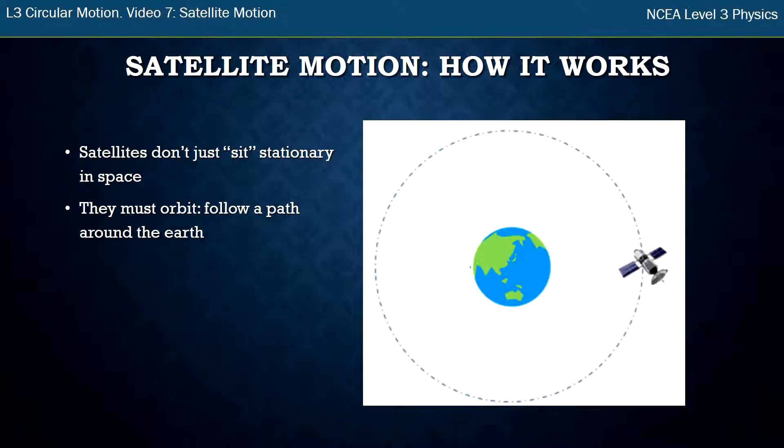A misconception is that satellites just sit stationary in space. They don't. They must follow an orbit, and an orbit is a path around the Earth, or it could be a path around the Moon or a path around the Sun. That's what an orbit is. Satellites don't just sit up there. They need to follow this path.